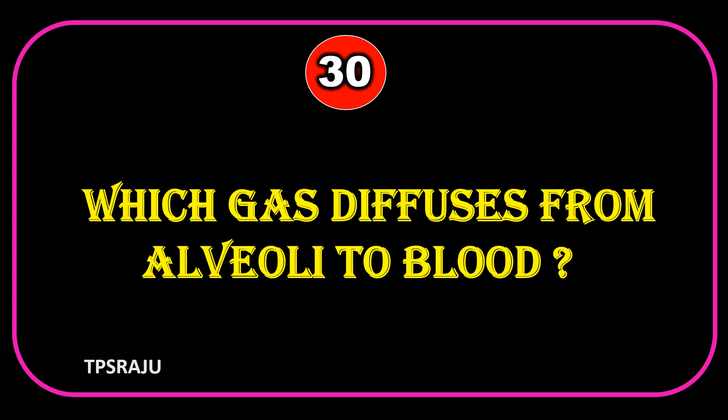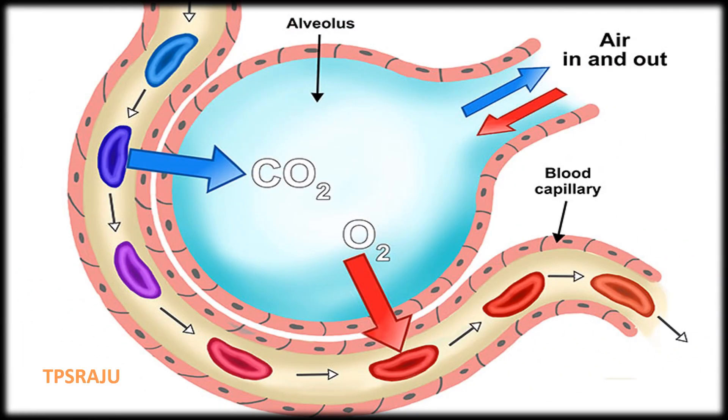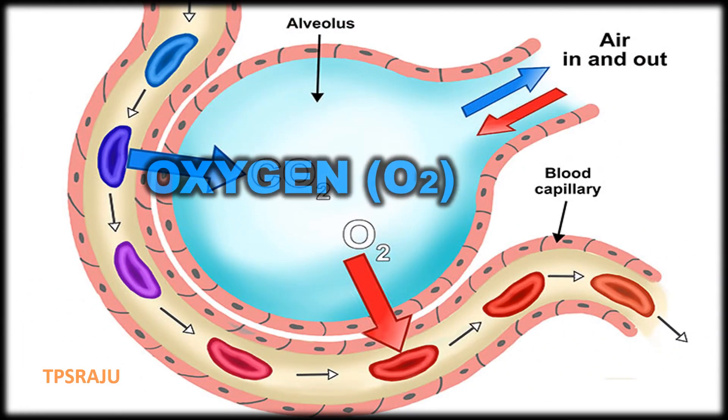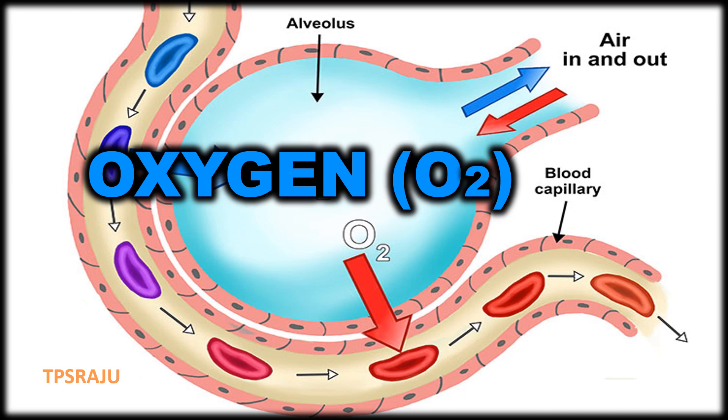Which gas diffuses from the alveoli to the blood? Oxygen.